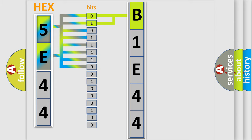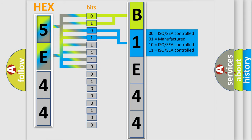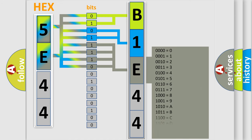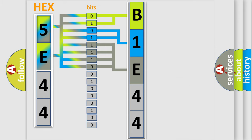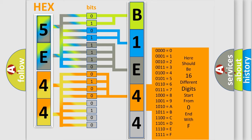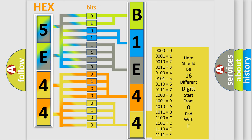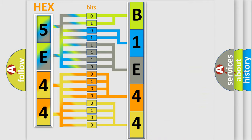The next two bits determine the second character. The last bits of the first byte define the third character of the code. The second byte is composed of a combination of eight bits. The first four bits determine the fourth character, and the combination of the last four bits defines the fifth character. A single byte conceals 256 possible combinations.